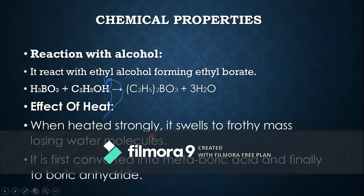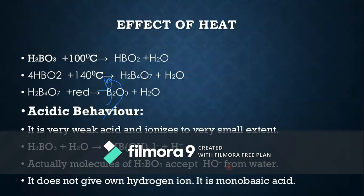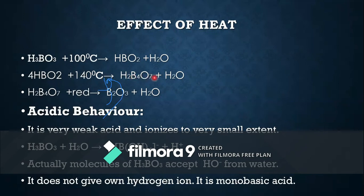When boric acid is heated strongly, it first converts into metaboric acid at around 100 degrees Celsius, with loss of water molecules. On further heating it forms tetraboric acid H₂B₄O₇, and when heated to red hot it forms boric anhydride B₂O₃, releasing water.